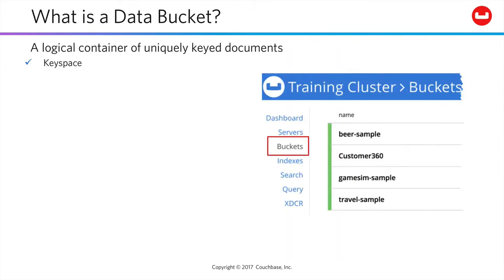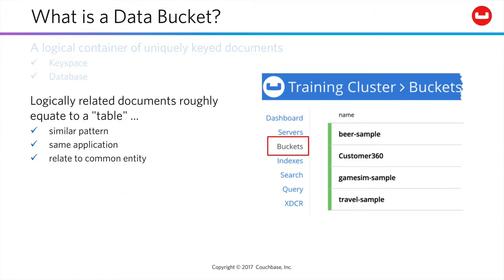Data buckets are logical containers of uniquely keyed documents. You could think of them as a key space, and possibly as a database, though their use patterns are driven by different concerns than a traditional RDBMS database and its entities. Going further, you could think of a set of logically related documents in a bucket as somewhat equivalent to a table. These documents may have the same pattern, or relate to the same application, or relate to an entity used consistently across multiple applications.